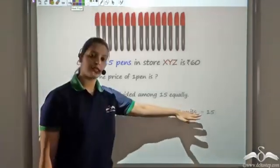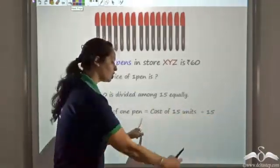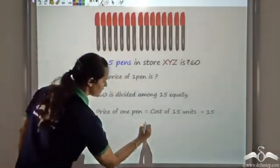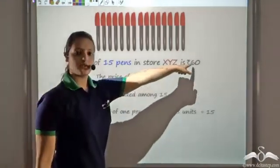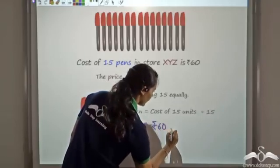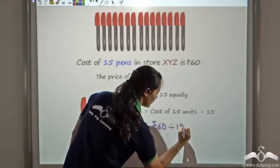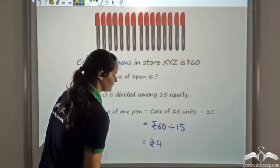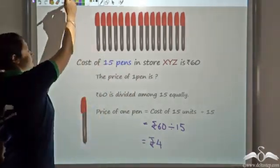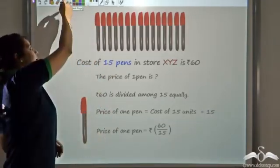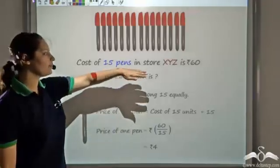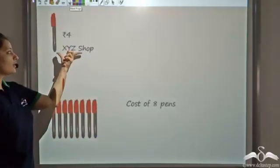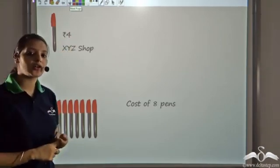The price of 1 pen would be the total cost divided by 15, because you have to divide the cost equally among 15 units. We know the cost of 15 pens is Rs 60, and we have to divide it by 15. So 60 divided by 15 gives me 4. The price of 1 pen in shop XYZ is Rs 4.